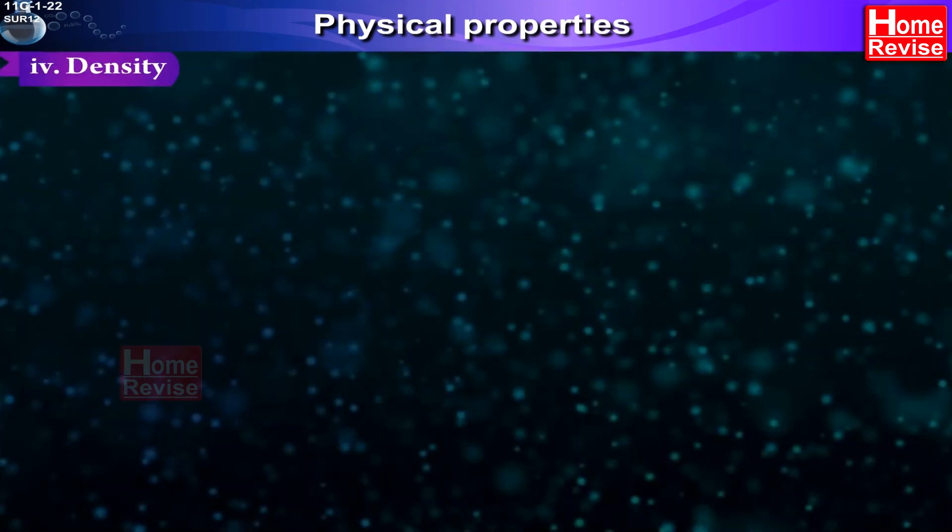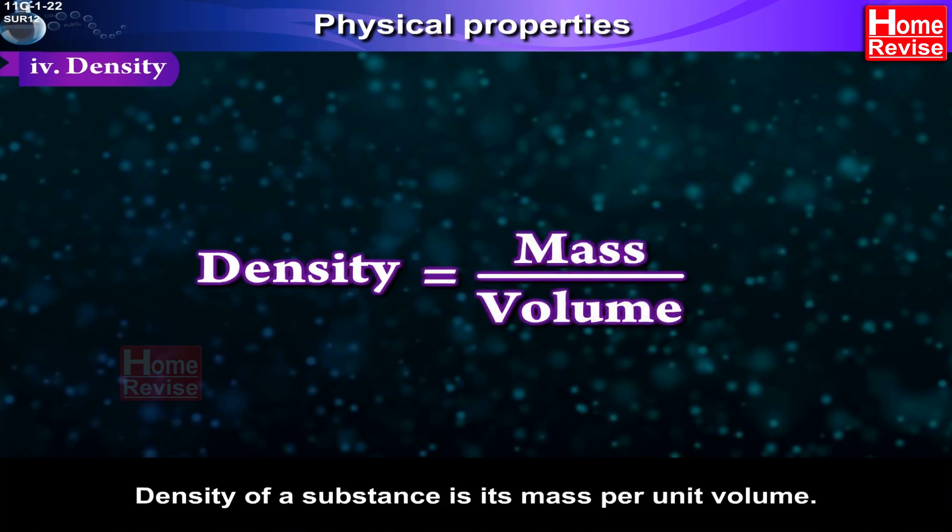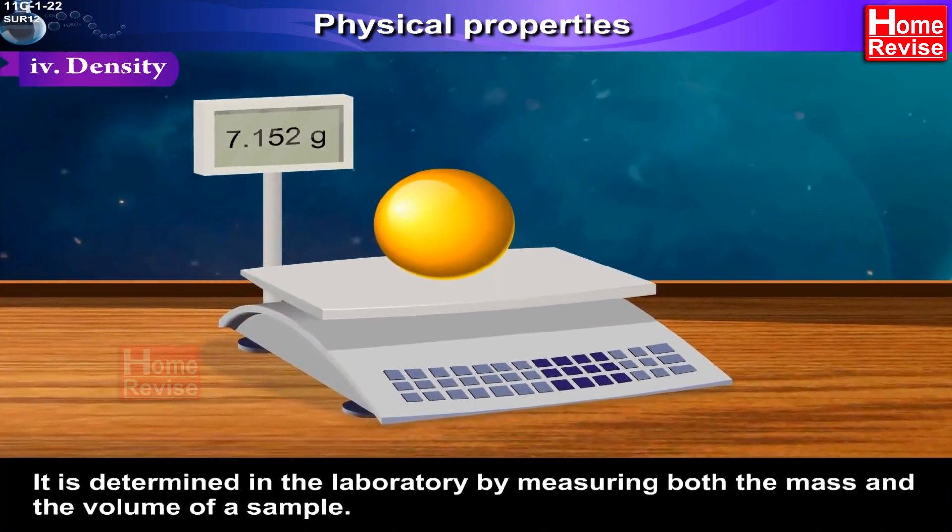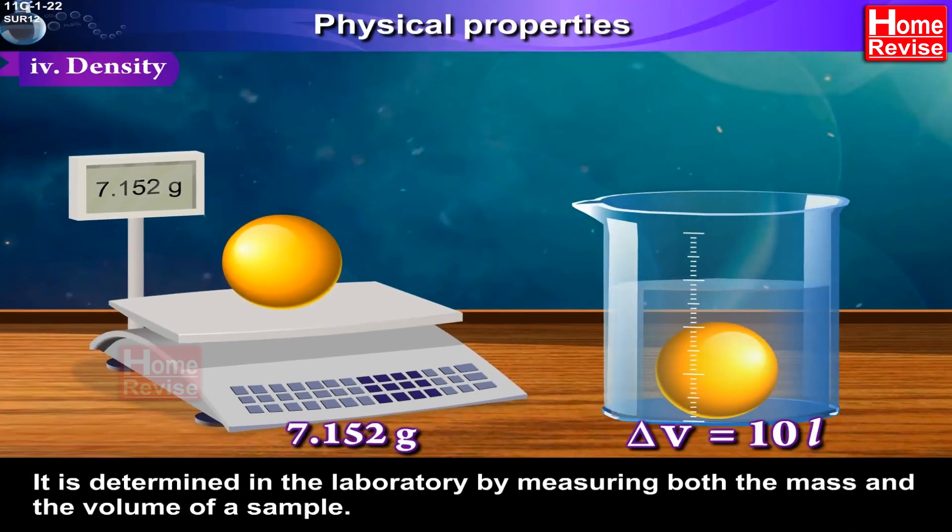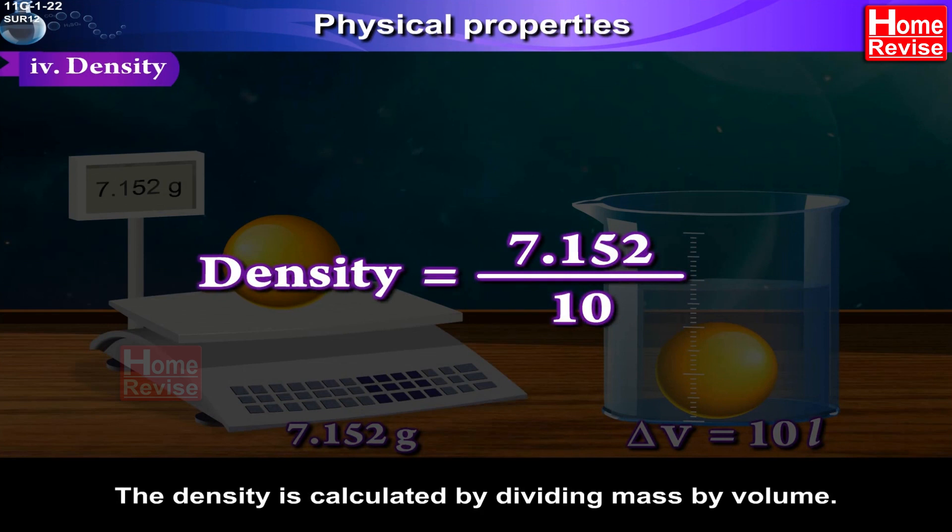Density. Density of a substance is its mass per unit volume. It is determined in the laboratory by measuring both the mass and the volume of a sample. The density is calculated by dividing mass by volume.